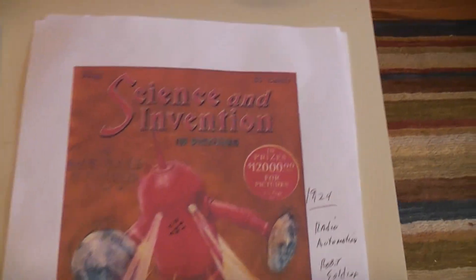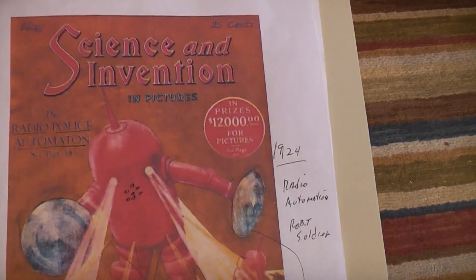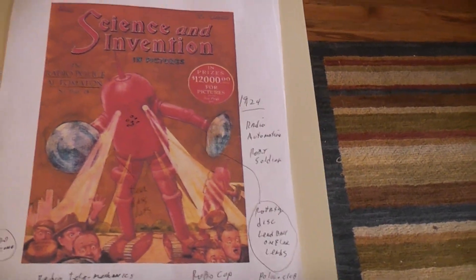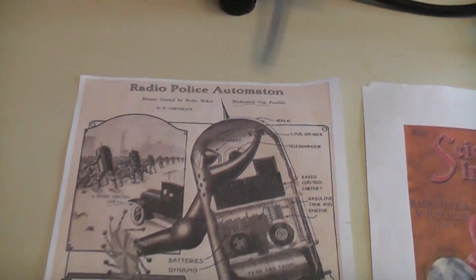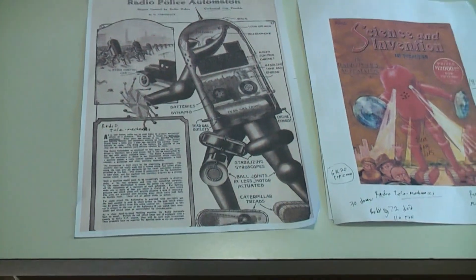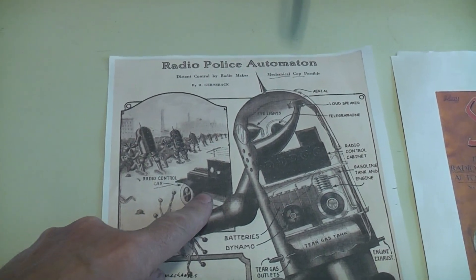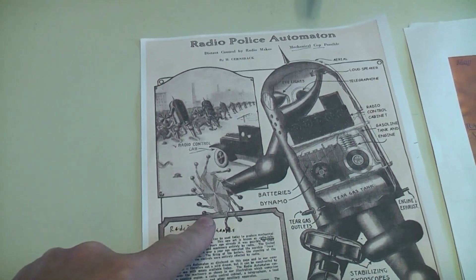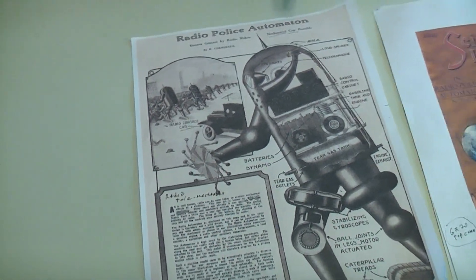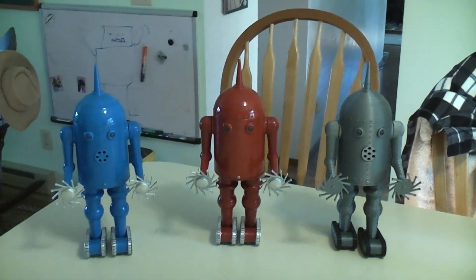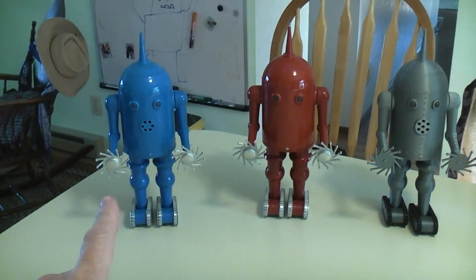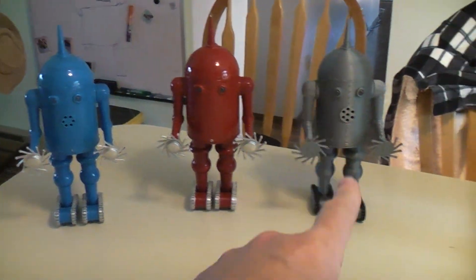Back in 1924, Science and Invention magazine proposed the idea of a radio police automation, basically a large robot that could be controlled by the police back in a car where it's safe, where they could beat the heads off people without getting hurt themselves. These are 3D printed - this is poly smooth, small poly smooth, and regular PLA on this one, and they are radio controlled.